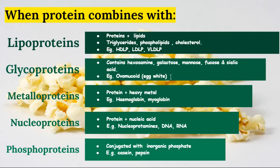Then we have metalloproteins. These are complexes of proteins and heavy metals, present in cells. Examples are hemoglobin and myoglobin. These are also present in egg as conalbumin. Then we have nucleoproteins, which are complexes of proteins and nucleic acids, present in nucleoprotamines and in DNA and RNA in small quantities. Then we have phosphoproteins, which are proteins conjugated with inorganic phosphate. An example is milk, which contains the protein casein and the enzyme pepsin.